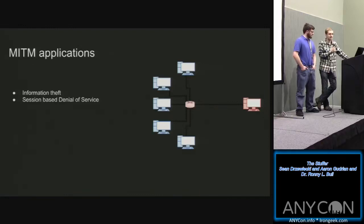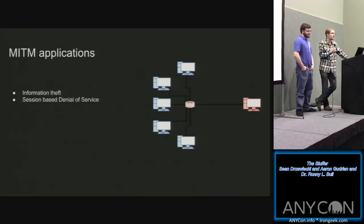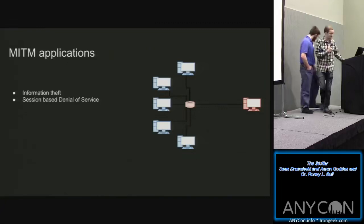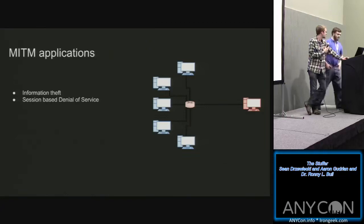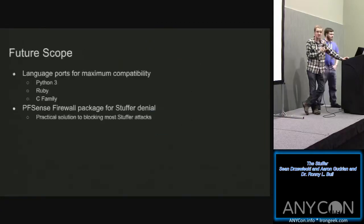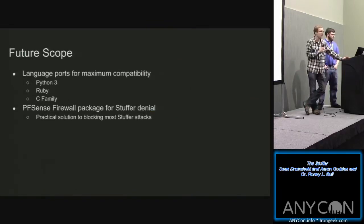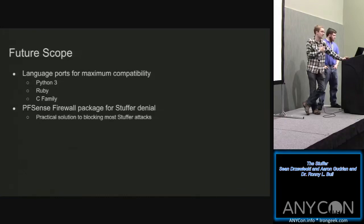Now we're going to show you some demos locally because we don't trust the WiFi. Right now, the stuffer is more of a concept than an implementation. We do have demos because people like to see things work, but it's more about the concept of playing around with TCP headers and inserting information into them. It's currently running Python 2.7 because the good libraries run on Python 2.7. You can port it to Python 3 — Scapy does work, but a few libraries which work with Scapy don't, and that's an issue for someone else.